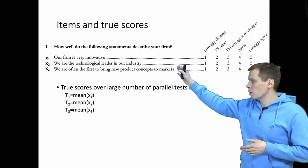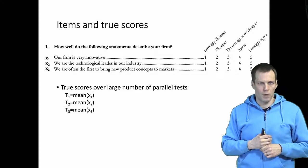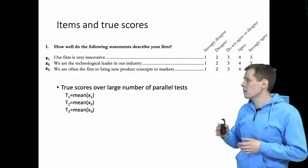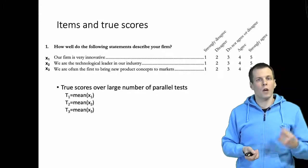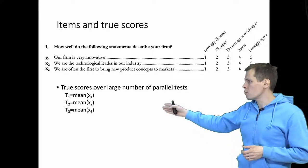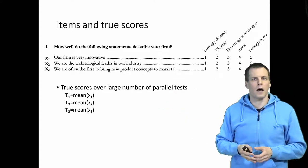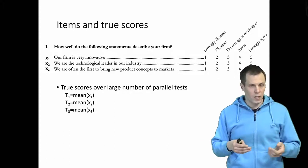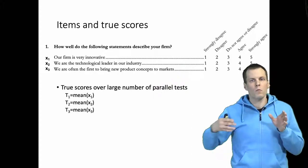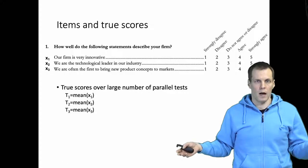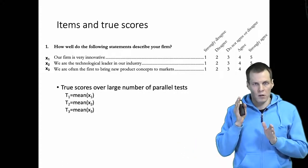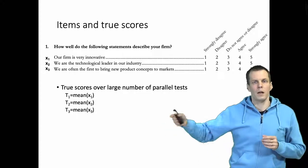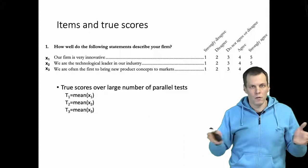Let's look at an example. We need to understand the concept of a true score a bit better to understand some of the reliability coefficients. This is an example of a hypothetical survey instrument or scale containing three questions, all supposed to measure company innovativeness. The true score of these items is defined as the long-run average measured from a specific individual. We would ask them to rate the firm, brainwash the individual so they don't remember answering, then ask again immediately — repeating this many times. The average of those measures is the true score.